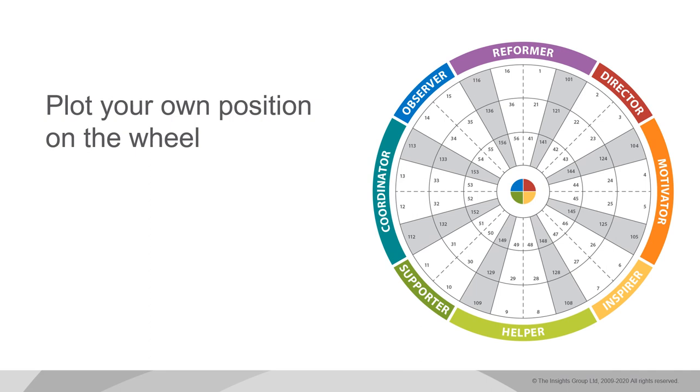Here we get people thinking about their unique wheel position and about their relationship with others who are close to them in the wheel, and their communication with people who may be in fact their opposite types. I will always insert the team wheel when I have it — remembering we never send it out in advance, so this will be the first time anyone has seen it. There's always a high level of interest and engagement on this slide. Show them the team wheel and ask them what it means to them — what they notice about the collective group, maybe the company or organizational culture.